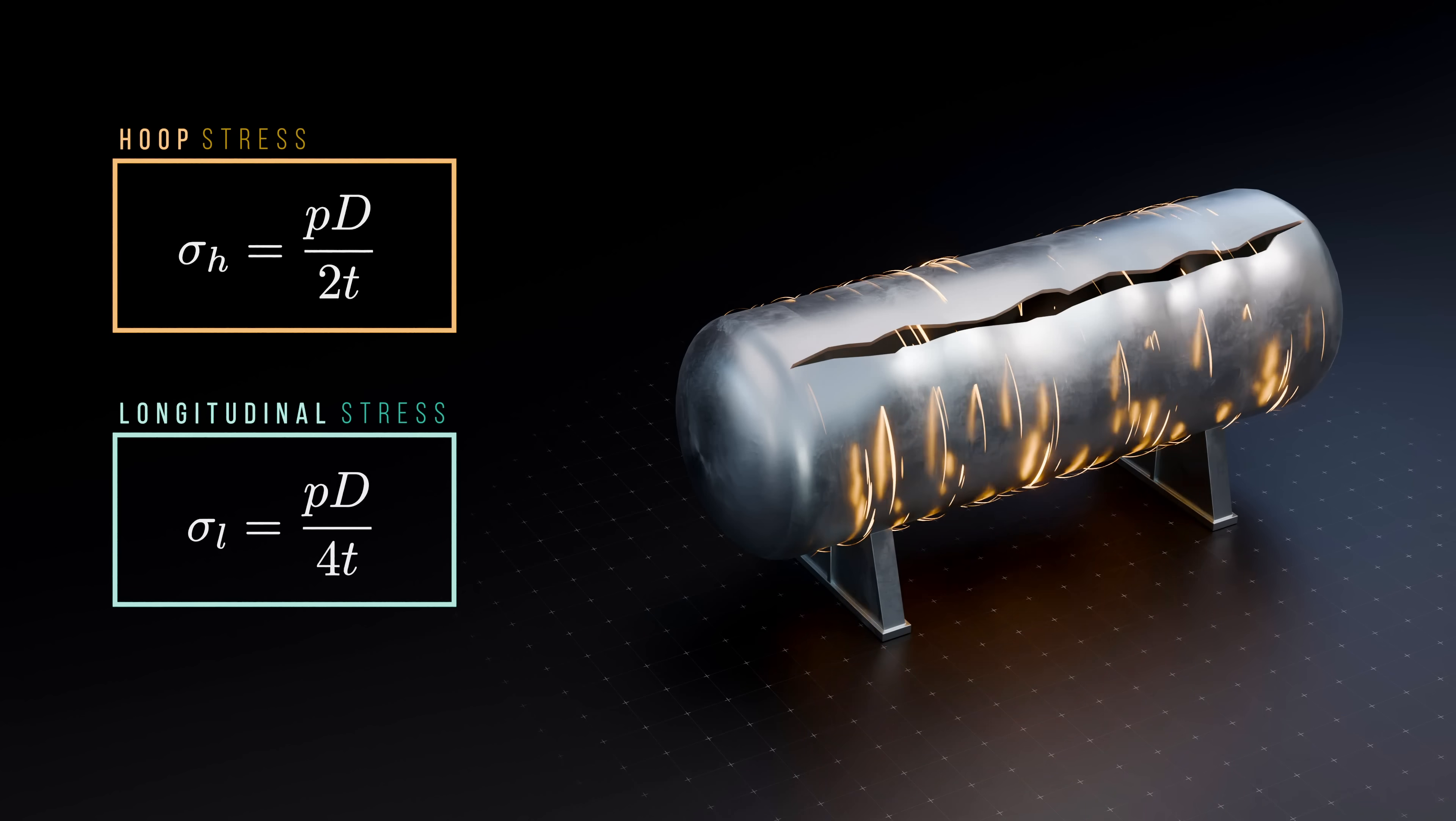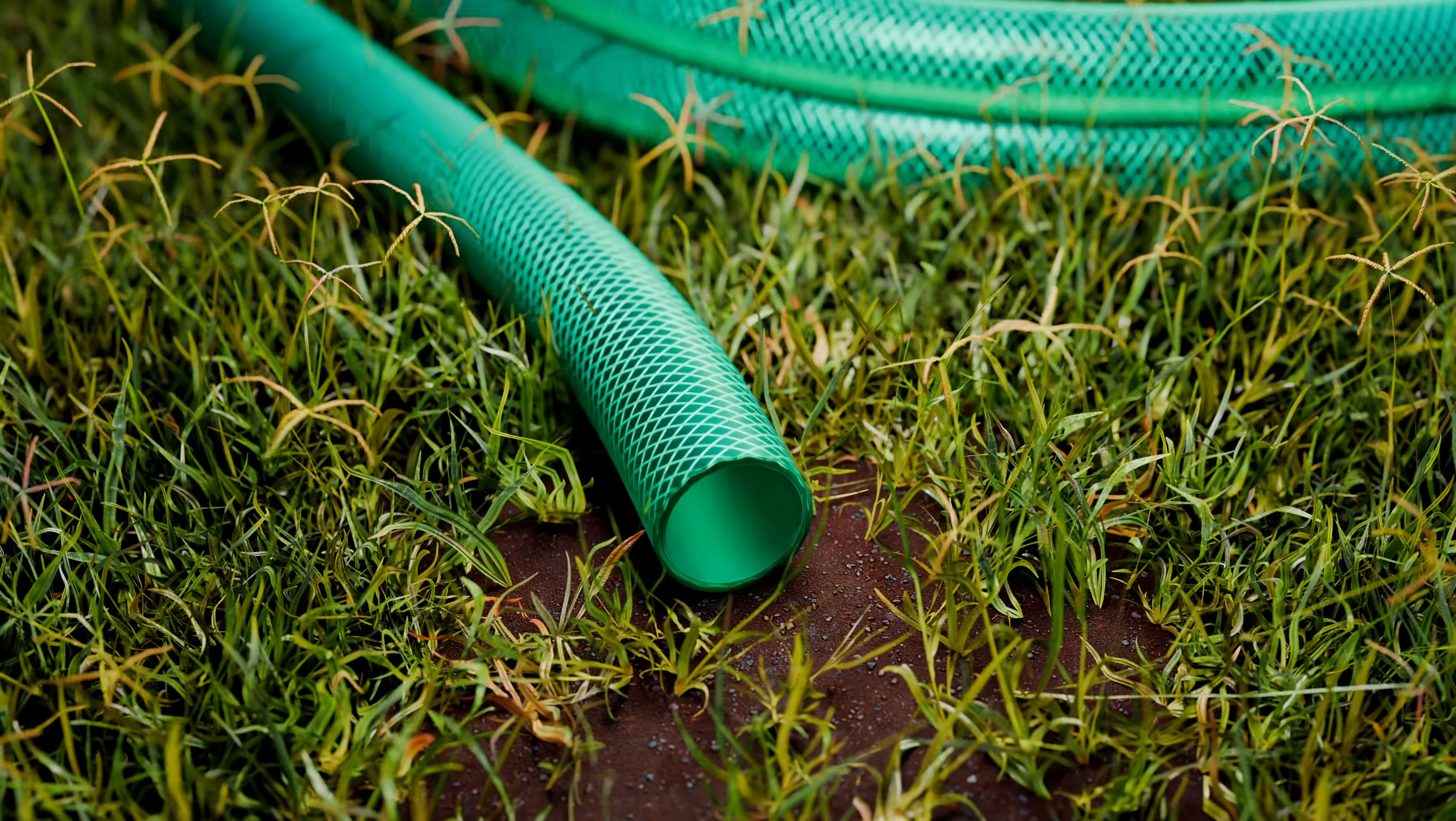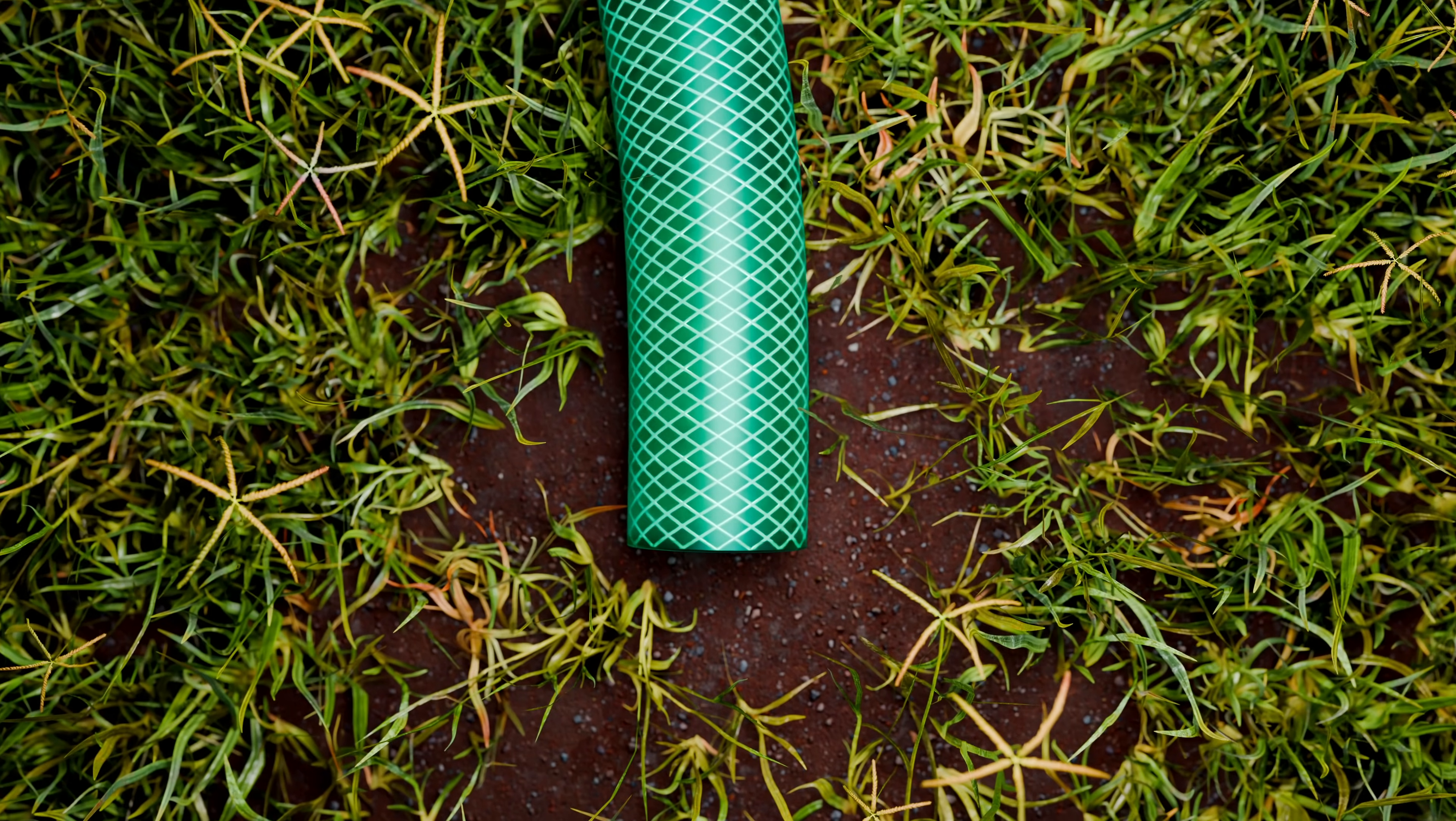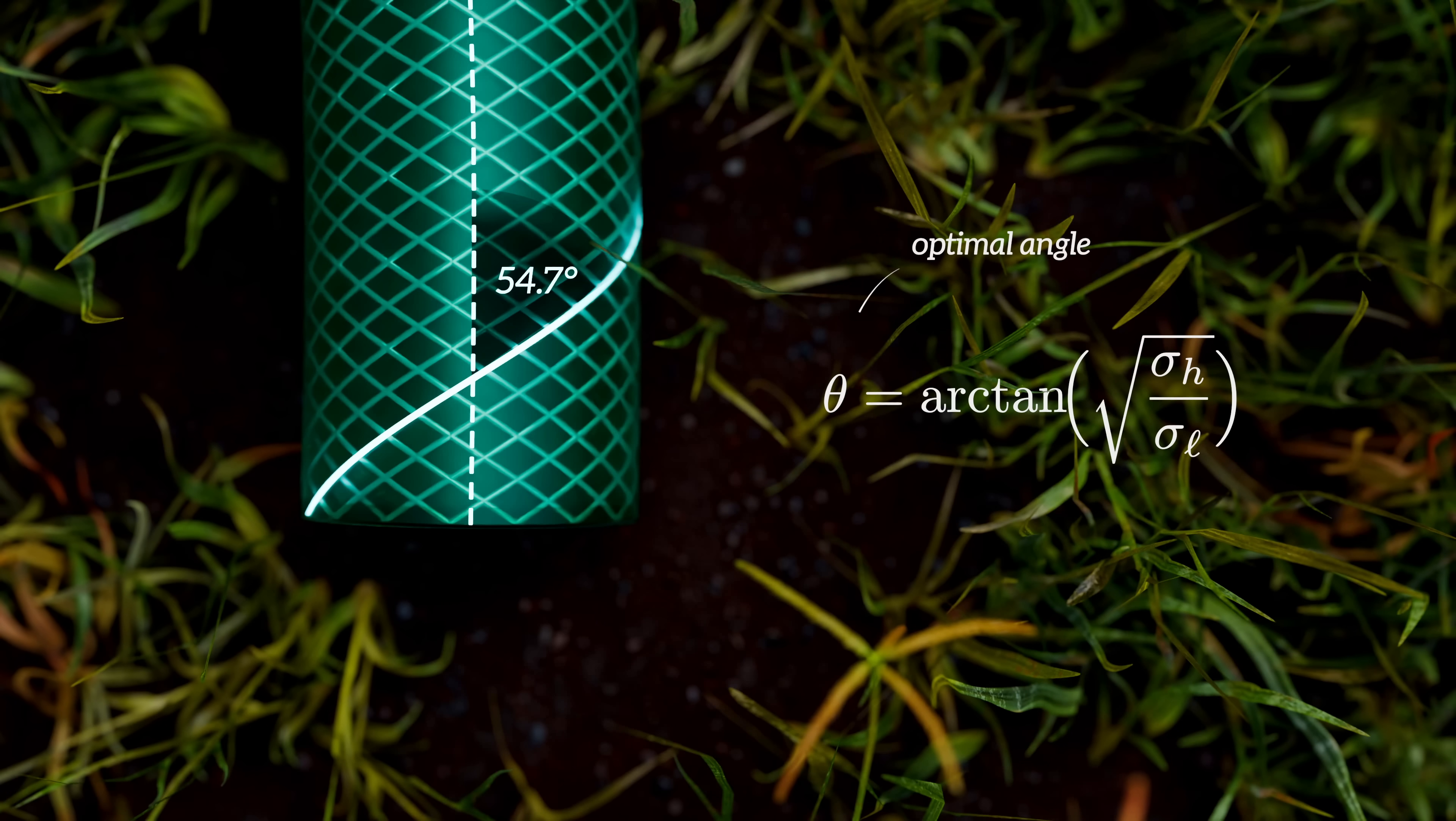The next time you're holding a garden hose, another type of pressure vessel, take a close look at the reinforcing fibers within it. Chances are they'll be oriented at exactly 54.7 degrees from the axis of the hose. This carefully selected orientation, called the magic angle, represents the theoretically optimal fiber direction for a scenario where the hoop stress is exactly twice the magnitude of the longitudinal stress. With this angle, the fibers are perfectly aligned to carry the hoop and longitudinal loads in the right proportions.